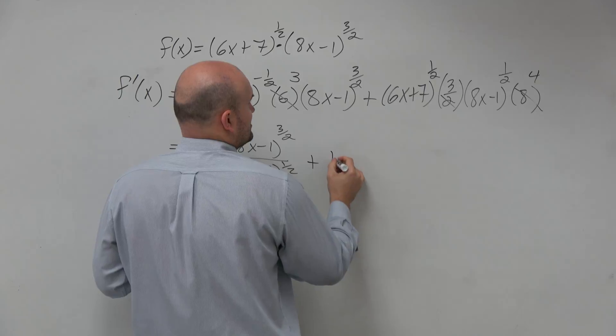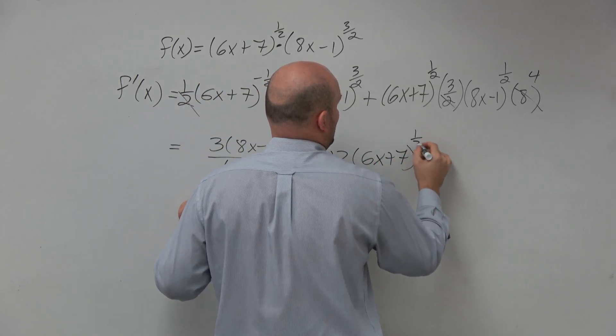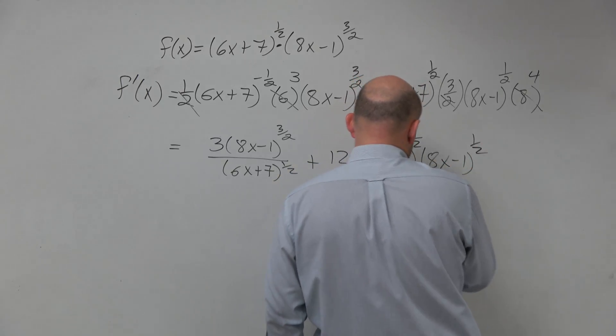What am I doing? Plus. So that's going to be 12, 6x plus 7 to the 1/2, times 8x minus 1 to the 1/2, all over 1.